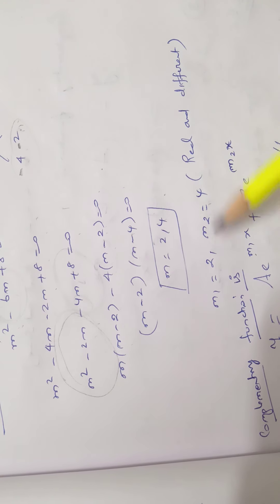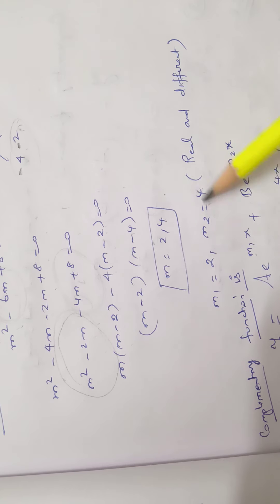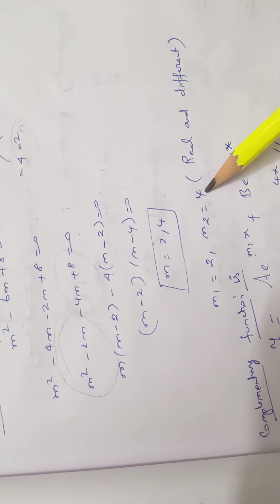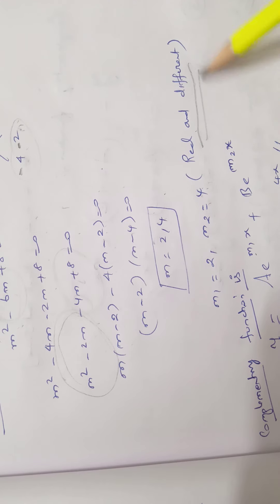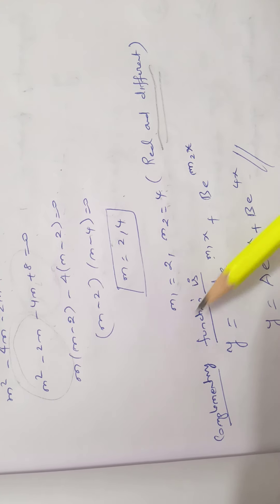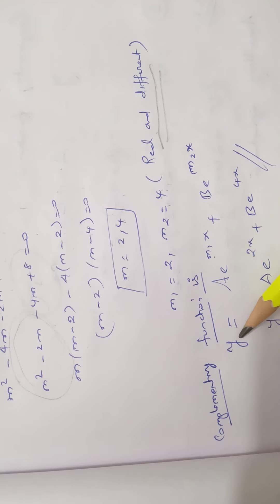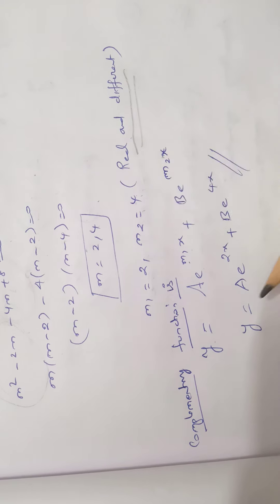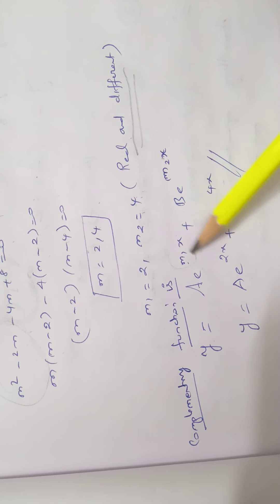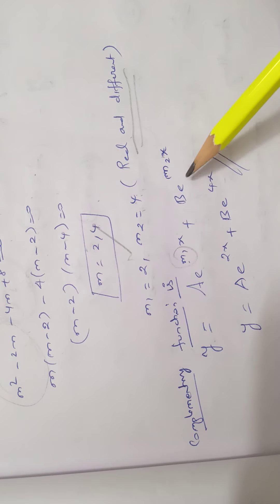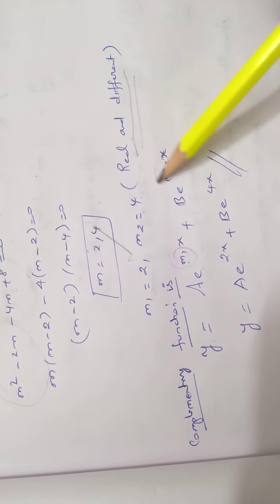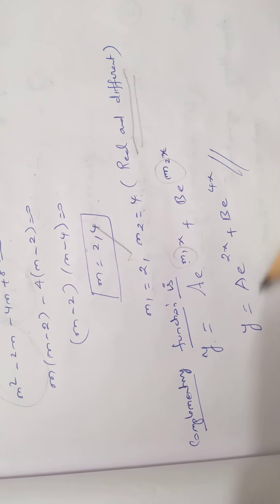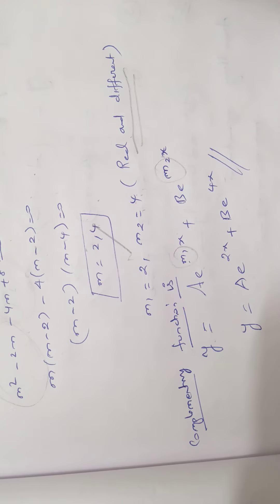The roots are real and different, so we apply the first complementary function: y = a·e^(m₁x) + b·e^(m₂x). With m₁ = 2 and m₂ = 4, the solution is y = a·e^(2x) + b·e^(4x). Hence the problem is complete.